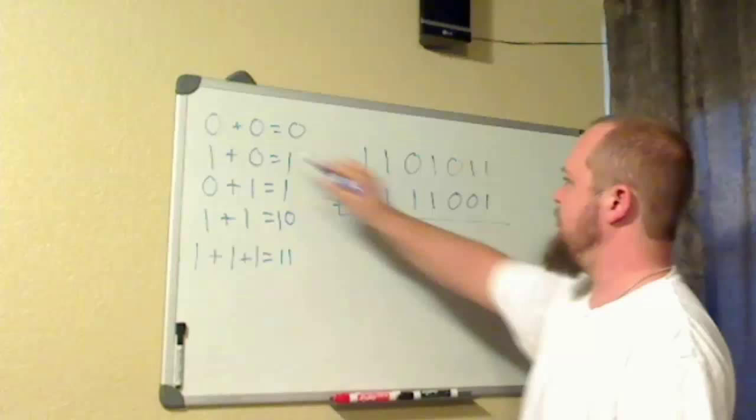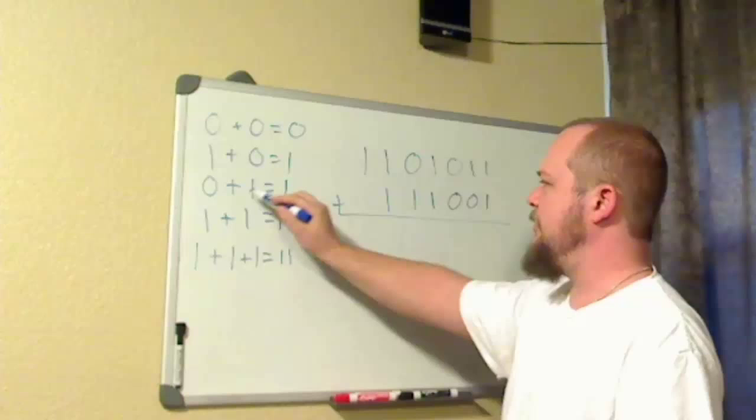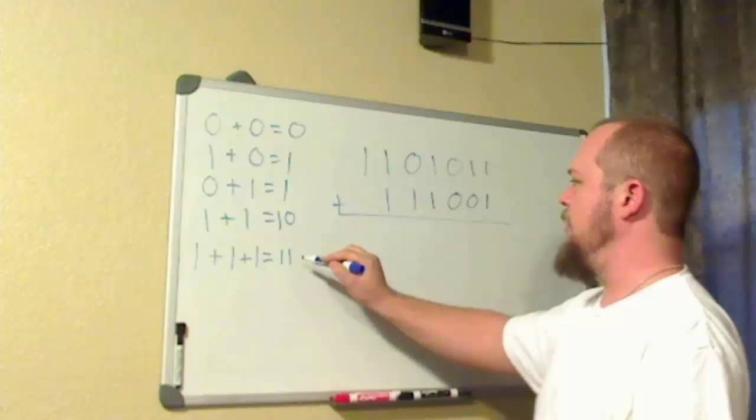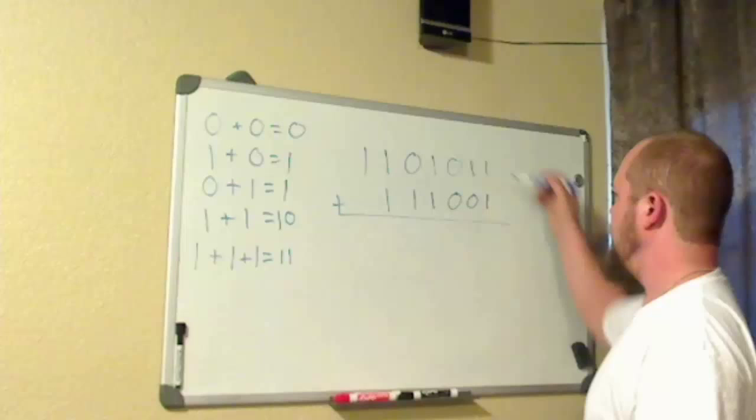For example, a 0 plus a 0 is always a 0. A 1 plus a 0 equals a 1. A 0 plus a 1 equals a 1. A 1 plus a 1 equals 2, which is a 1, 0. And a 1 plus a 1 plus a 1 equals 3, which is 1, 1 in binary.